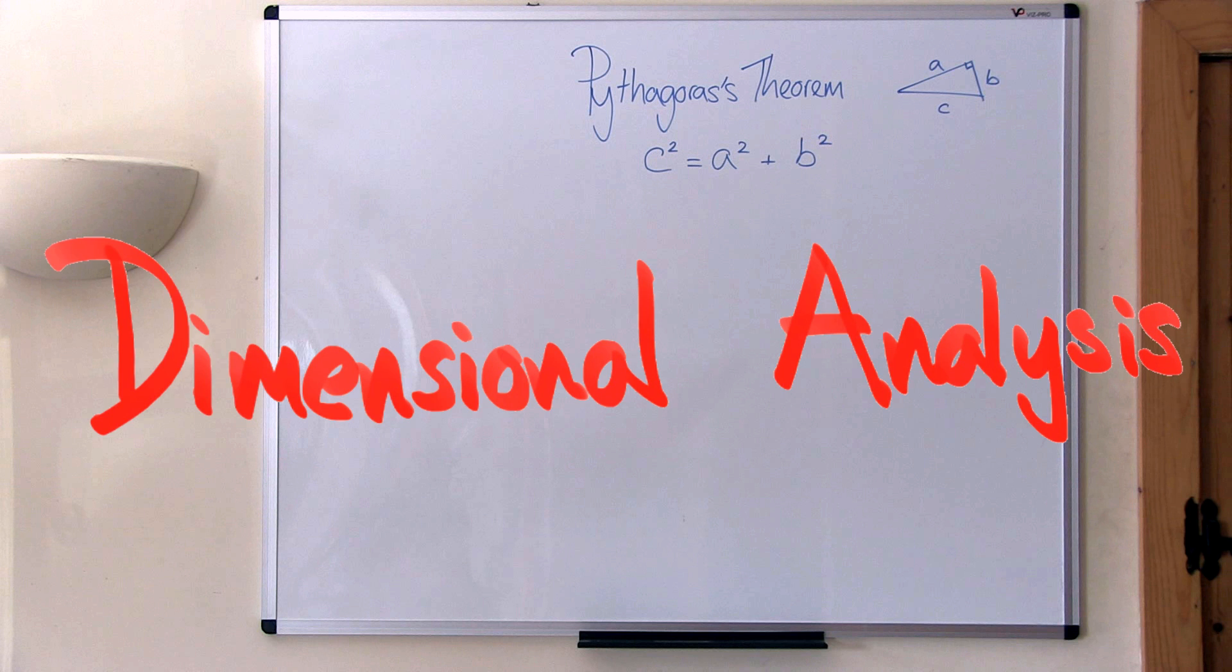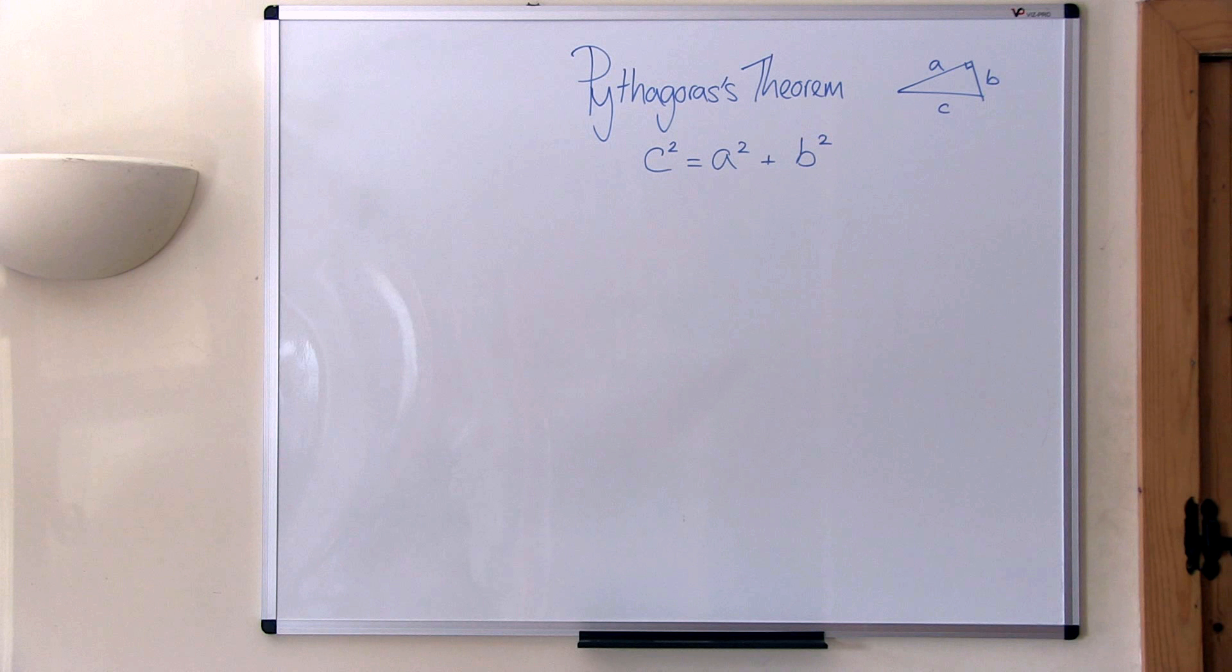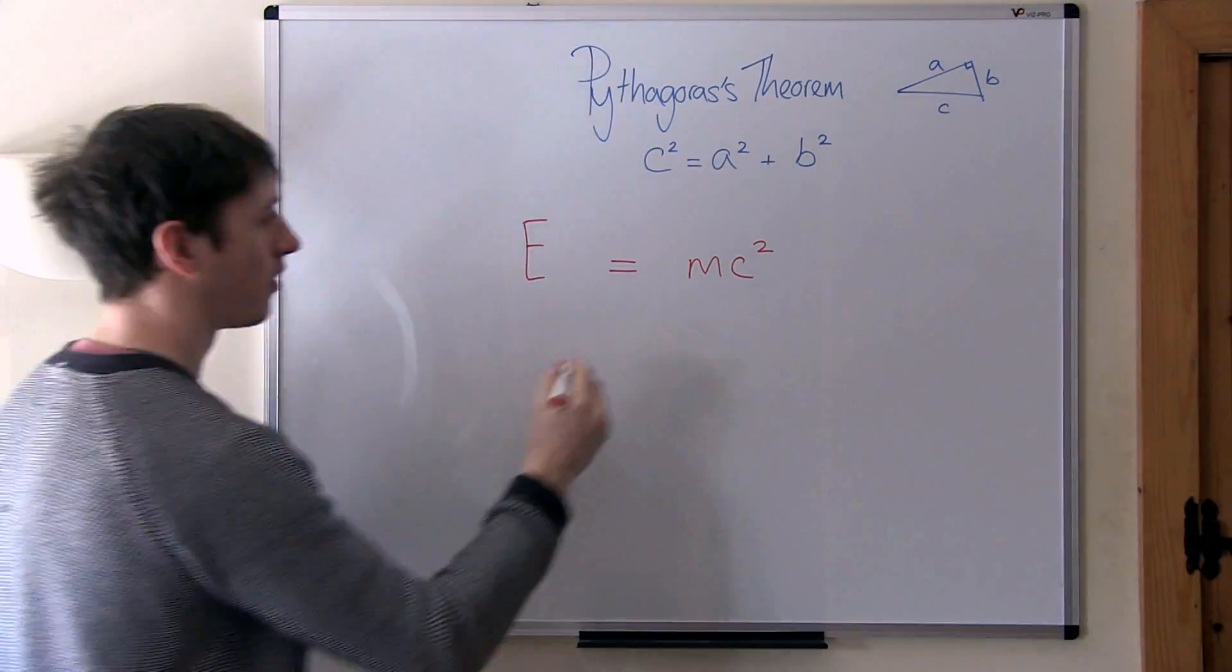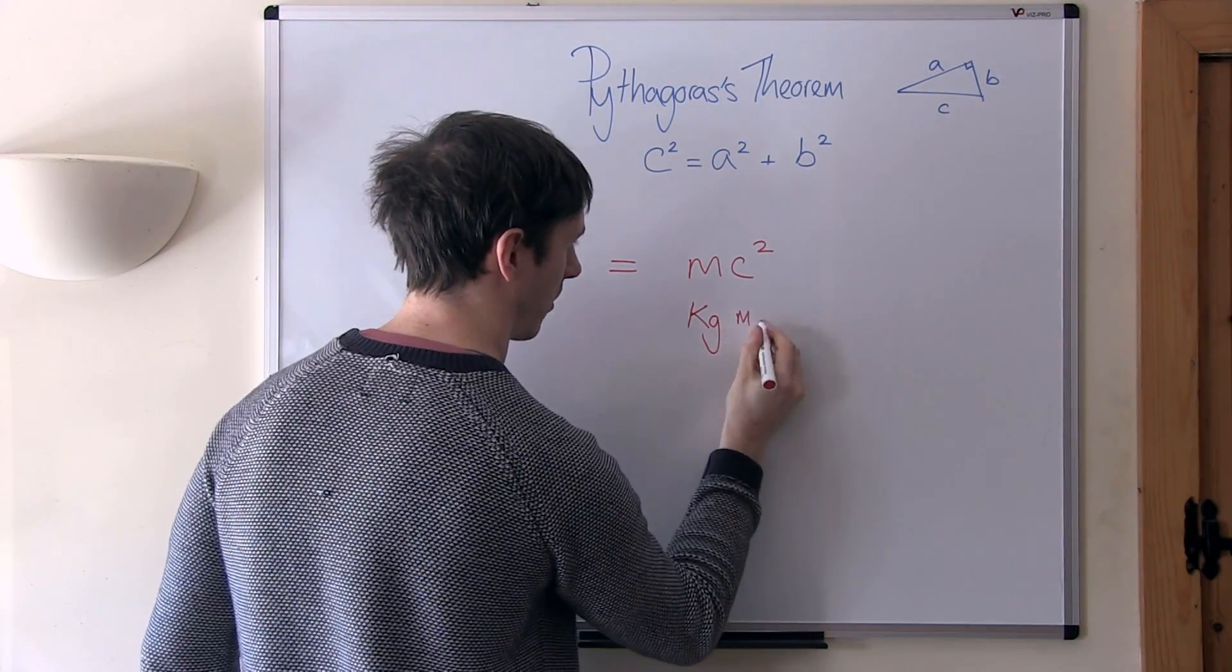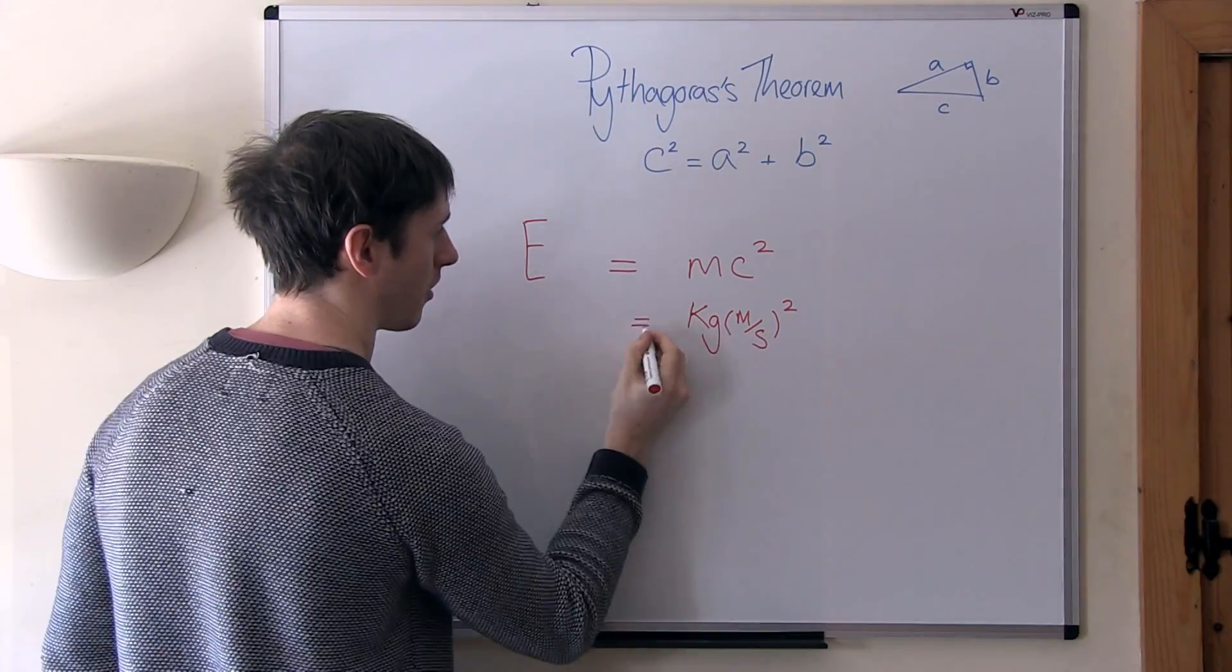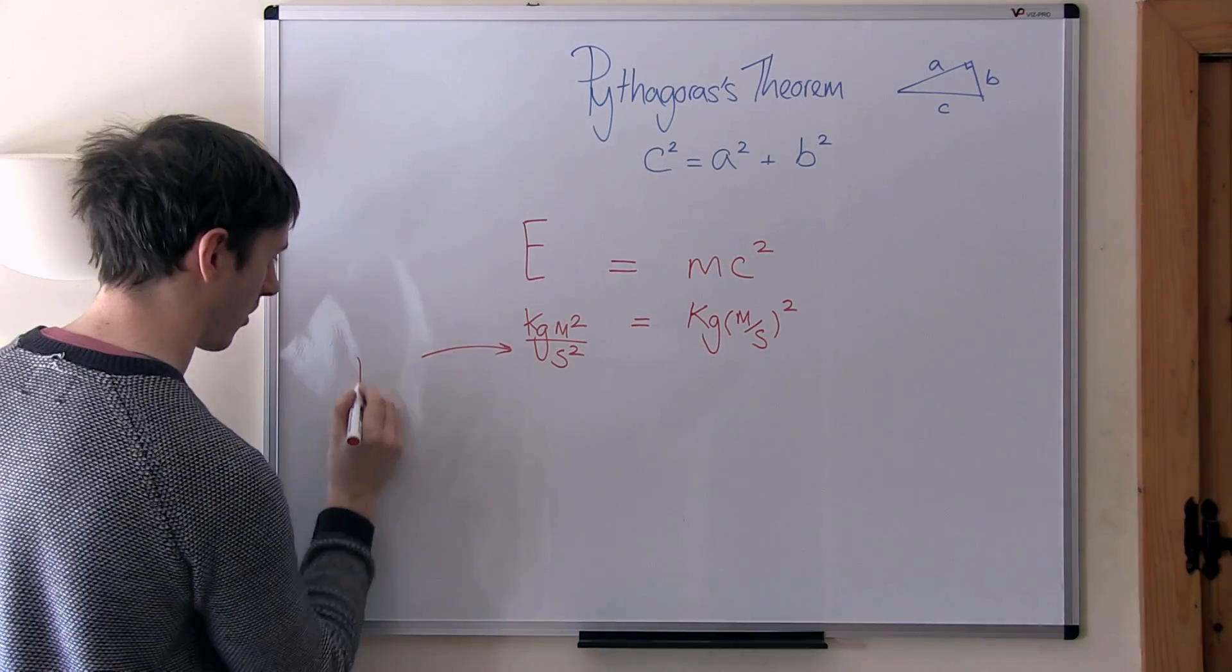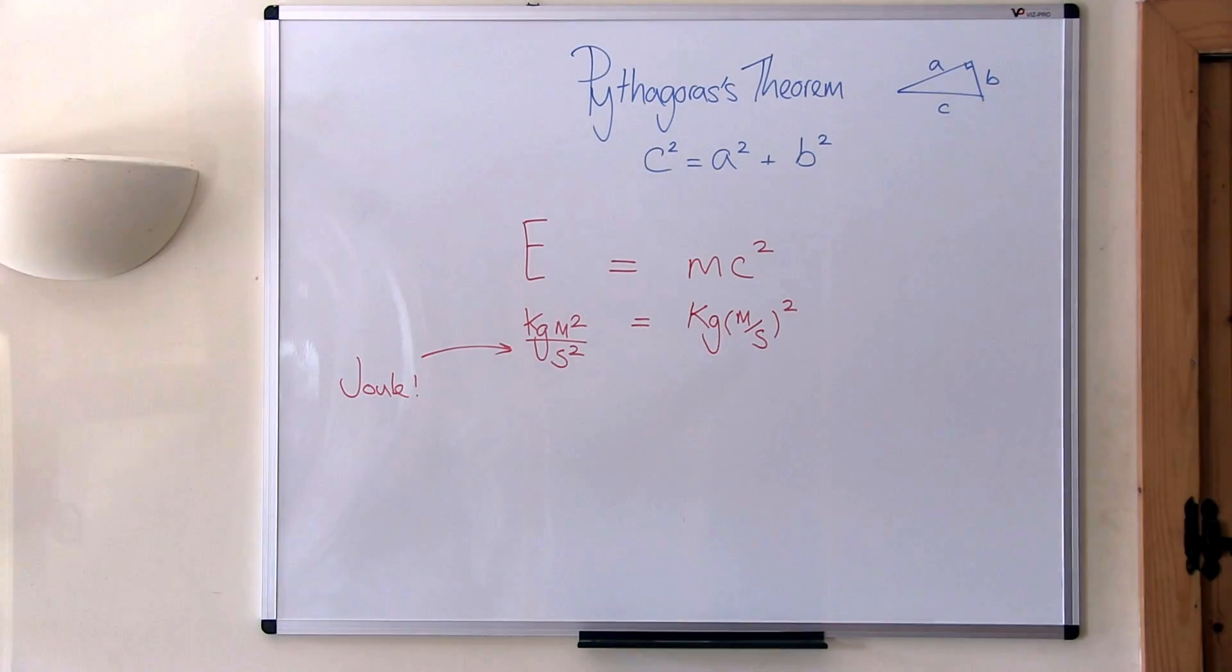Dimensional analysis is the principle that the units on the left-hand side of an equation must be the same as the units on the right-hand side. Let's take E equals MC squared. The unit of mass is the kilogram, the unit of speed is metres per second, and so the unit of energy must be kilogram metre squared per second squared. That's just what we call a joule. Dimensional analysis is a way of checking our physics equations are consistent.